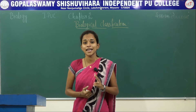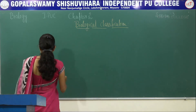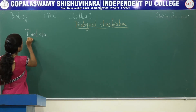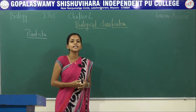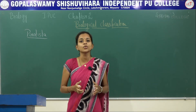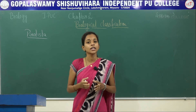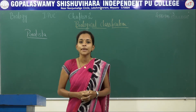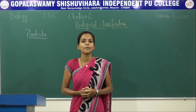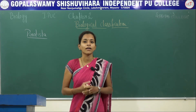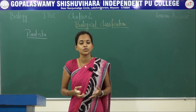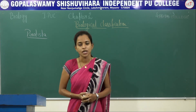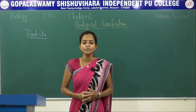Today I will be introducing you to the second kingdom, that is Protista. Protista includes unicellular eukaryotic organisms. When it comes to eukaryotic organisms, it means they have a specified nuclear membrane plus organelles like mitochondria, Golgi complex, lysosomes, etc., which have particular membranes that help in protecting them. So these are more advanced when compared to kingdom Monera.